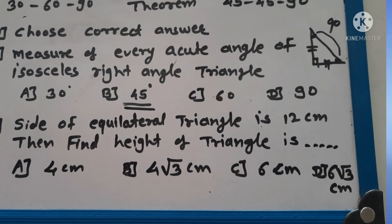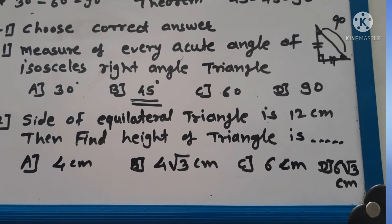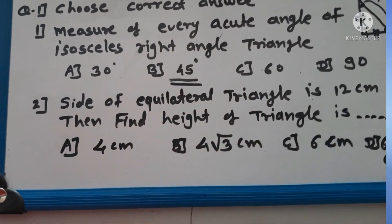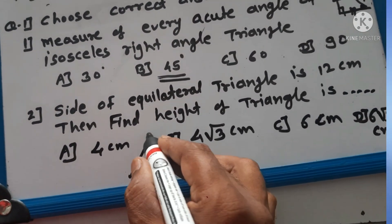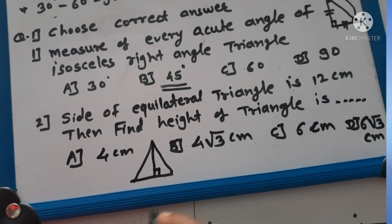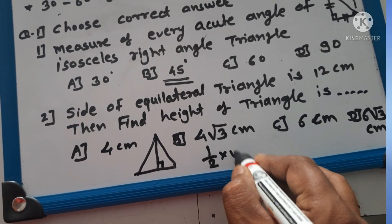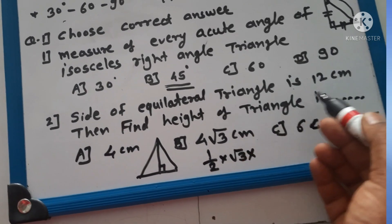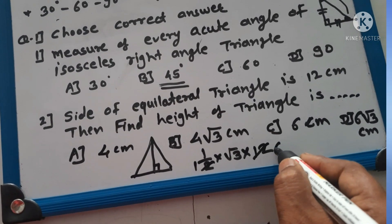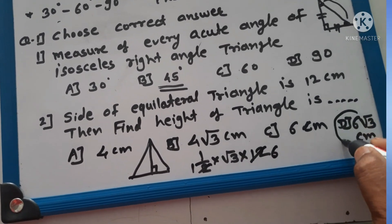Next: the side of an equilateral triangle is 12 cm. Find the height of the triangle. The height means the altitude. The formula for the altitude of an equilateral triangle is 1 upon 2 into root 3 into side. The side is 12. So: root 3 upon 2 into 12 — 2 and 12 give 6. The right answer is 6 root 3. Option D is the correct answer.